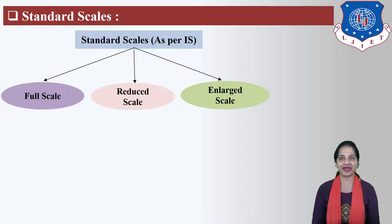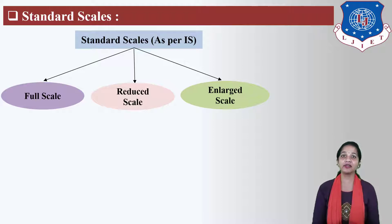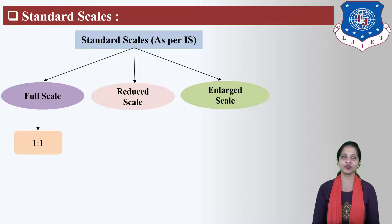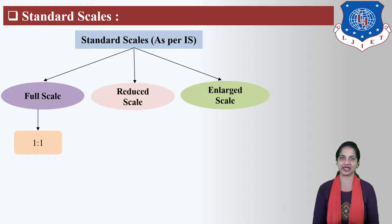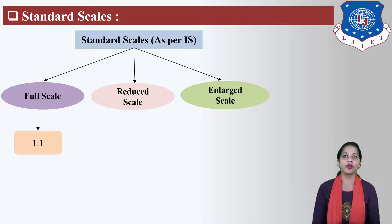Full Scale is used where medium size objects are drawn on medium size drawing paper with their actual size. It is represented by 1 to 1. Reduce Scale is used where extremely large objects are drawn on medium size drawing paper with their reduced size. Like the Map of India or Building Drawings, which are drawn on drawing paper with reduced scale.